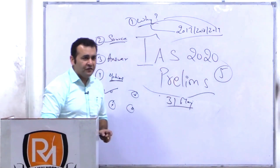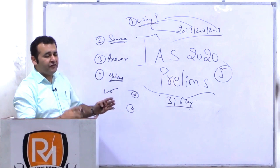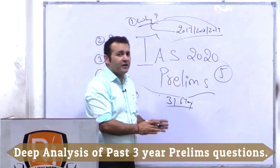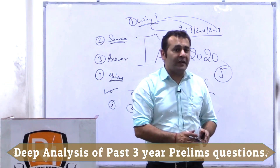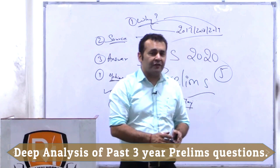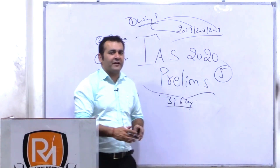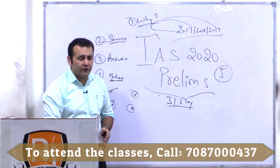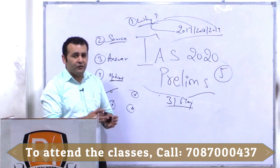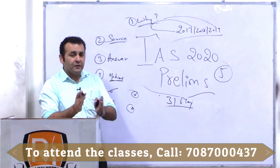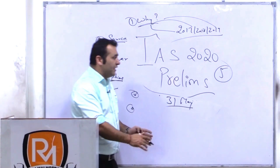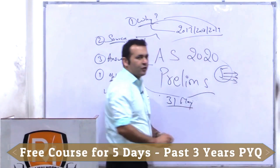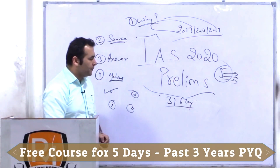The fifth important thing is that once we will be decoding the last three previous papers and what they have been asking, you will be able to yourself understand what kind of questions they can ask this year, what sources you have to confirm, what sources you have to focus on more, and then you can make your own success plan for 2020.